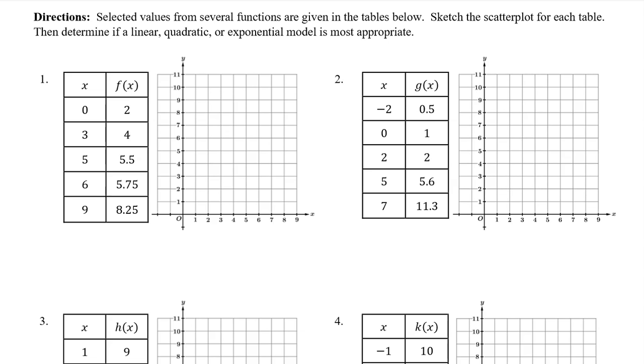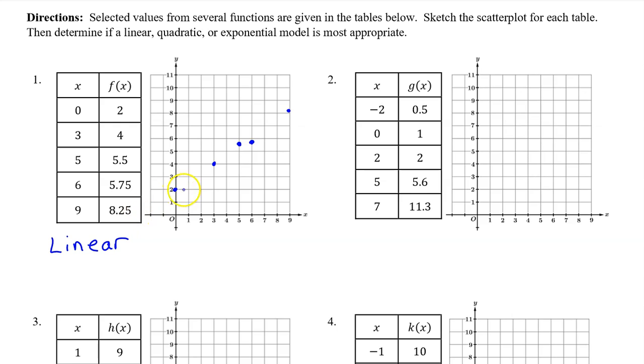Selected values from several functions are given in the tables below. Sketch the scatterplot for each table, then determine if a linear, quadratic, or exponential model is most appropriate. Here's the scatterplot for number one. The pattern looks roughly linear, but let's see if we can back that up with numbers in case we are ever asked to justify.